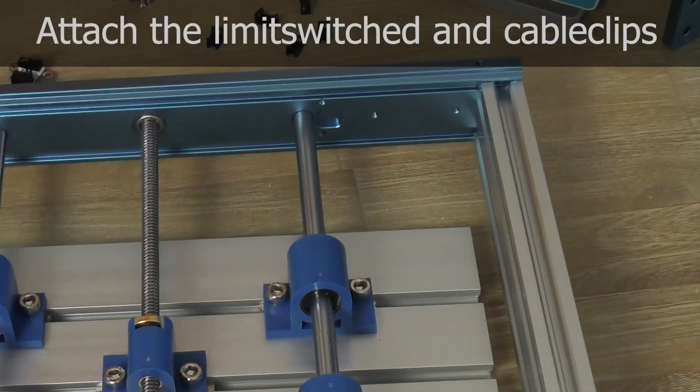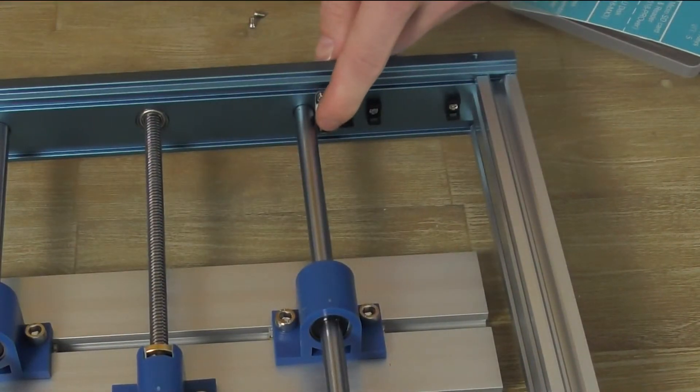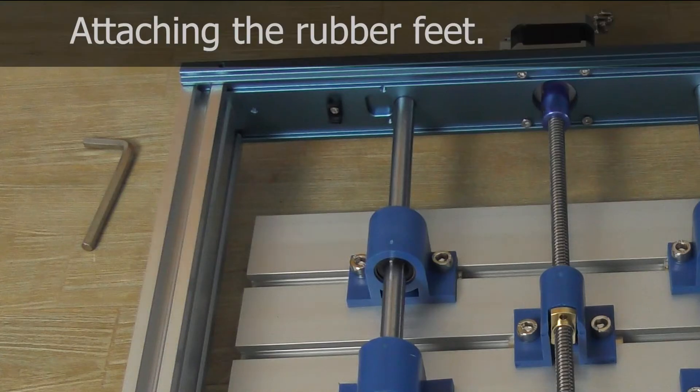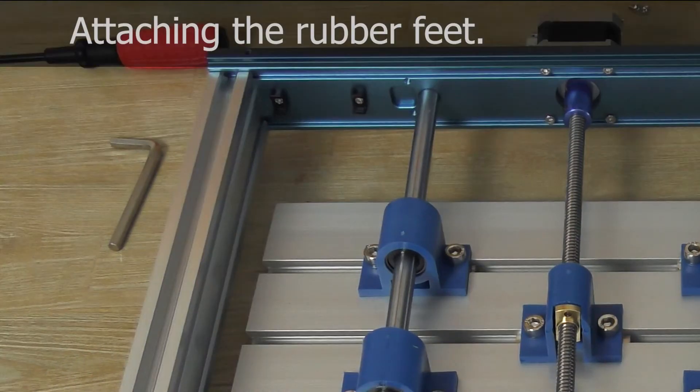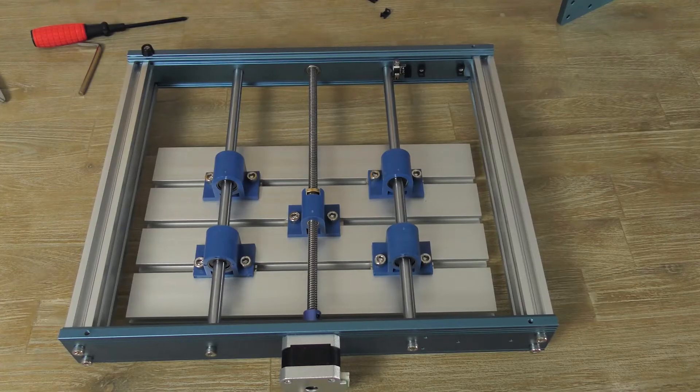After this, it is time to attach the limit switches and the small black clips for the cable management. The kit also comes with four rubber feet that you can screw in the corners of the bottom.